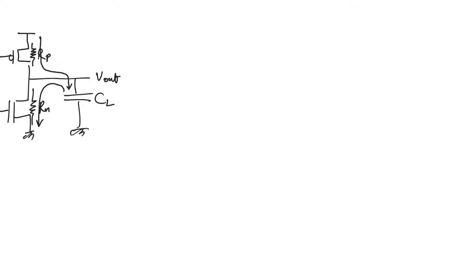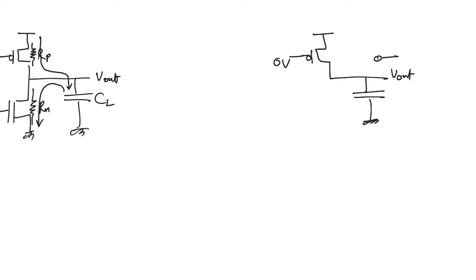Let's assume that the output is first charging up to V_DD — the output node is charging from zero volts to V_DD. This is the load capacitance C_L, and this is the PMOS. Current is going to flow through the PMOS and it's going to dissipate power in it, and we want to find this amount of power.